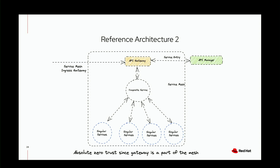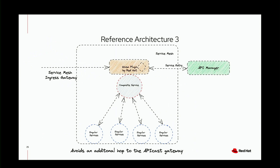In the second reference architecture, the API gateway is part of the Service Mesh, giving you mutual TLS between the API gateway and the composite service, with full Service Mesh security policies between them. In the third architecture — the one I couldn't fully show — the WebAssembly plugin sits with the composite service, avoiding an additional hop. If latency is an issue and you don't want that extra hop through a separate data plane, you can use this lightweight WebAssembly plugin that integrates Service Mesh and API management, talking to the 3scale API manager for credentials, analytics, and monetization.